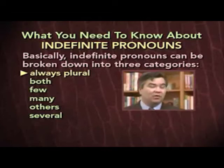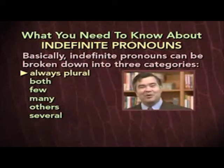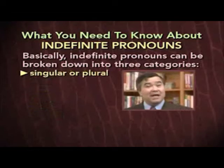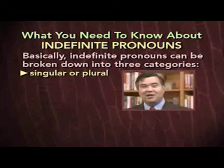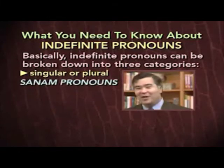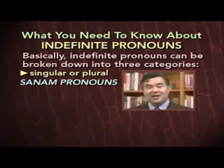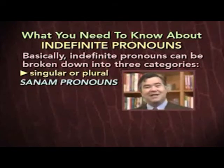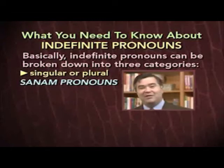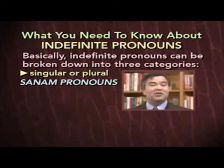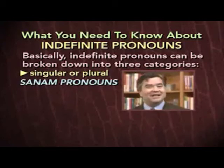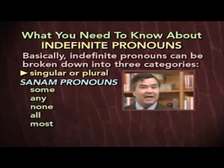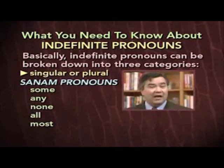That's why they're considered plural grammatically and need to be matched up with a plural verb. Now, here comes the tricky bit. There are five pronouns which may be either singular or plural, depending on how they're used. We call these the SANAM pronouns, simply because those letters — S, A, N, A, M — are an acronym that reminds us of the five pronouns involved. The five SANAM pronouns are some, any, none, all, and most.